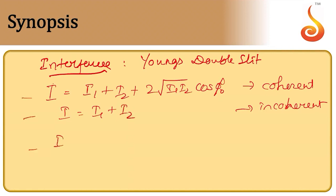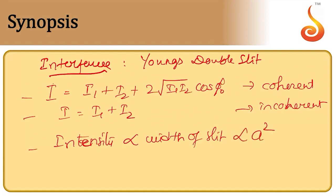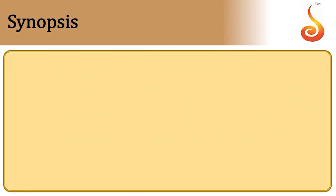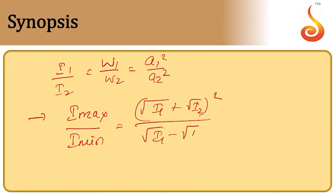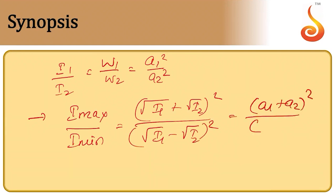Intensity is directly proportional to slit width and to amplitude squared. So I1/I2 = w1/w2 = a1²/a2². Using this, I_max/I_min = (a1 + a2)² / (a1 - a2)². These are generic equations for interference.